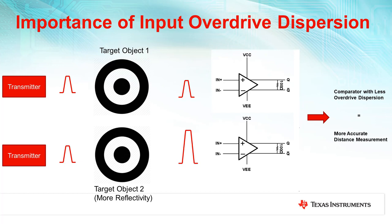This would result in a reflective pulse that has a larger amplitude than the other object. Selecting a comparator with small input overdrive dispersion means the system can measure the distance between these two objects with little to no variance. Having a fast comparator generally means that the overdrive dispersion it has will be smaller than of a general purpose comparator, so it is important to choose a relatively high speed comparator to minimize the amount of overdrive dispersion in the system.